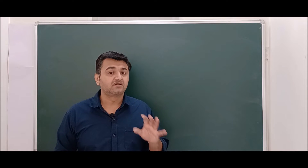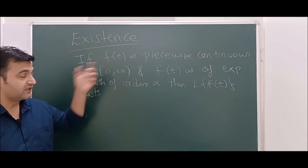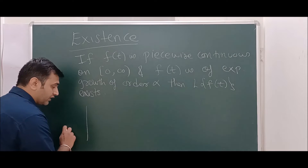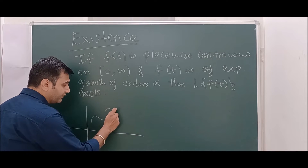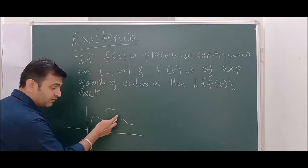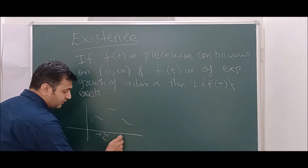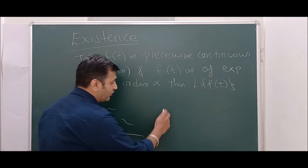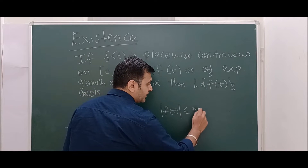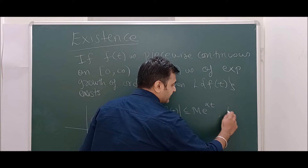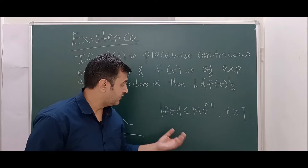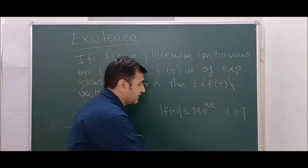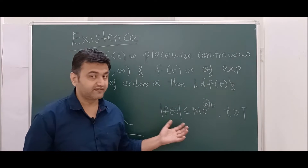Let's recall the existence theorem. The statement is: if a function satisfies two conditions — it must be piecewise continuous (continuous in pieces, and wherever it is discontinuous its left-hand and right-hand limits must exist) — and it must be of exponential growth, meaning after some stage t ≥ T the function is bounded by a constant times an exponential. That least alpha is called the order of the function.